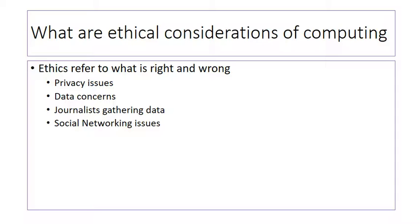We've got four different bullet points here — four different ideas and areas which you can go away and research. For example, journalists gathering data. If we think about websites such as WikiLeaks, whose sole job is to leak confidential information, journalists use that as a source a lot. But before the information gets leaked, they've got the ethical decision to make of whether it's right or wrong to be leaking that information.